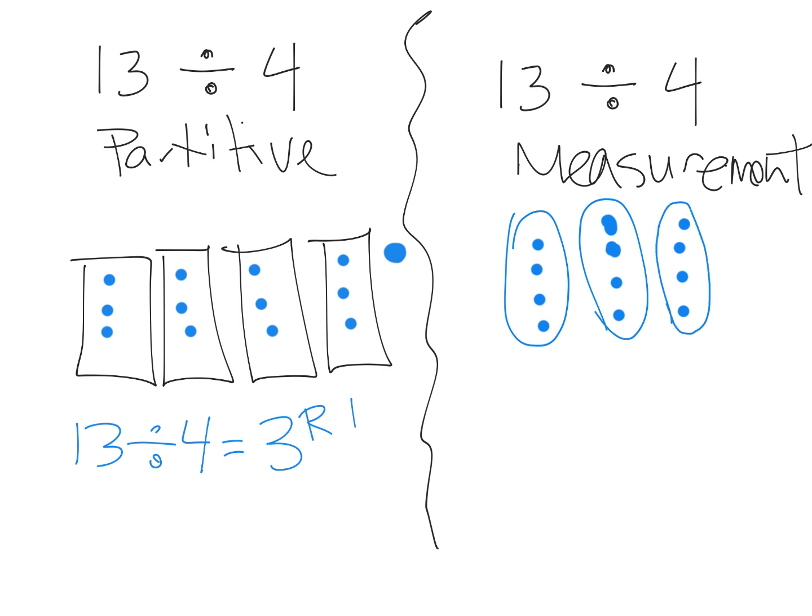Do we have enough to make another group? No. So there's our remainder. And so again, we can see that our answer, 13 divided by 4, is 3 remainder 1.